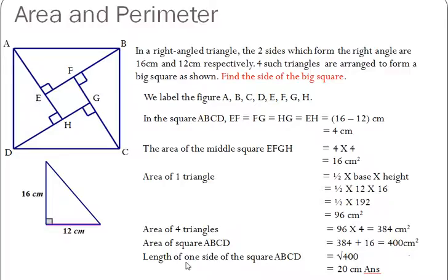Now, the length of one side of a square ABCD is equal to the square root of 400, and this is equal to 20.